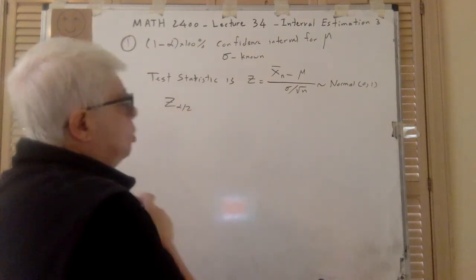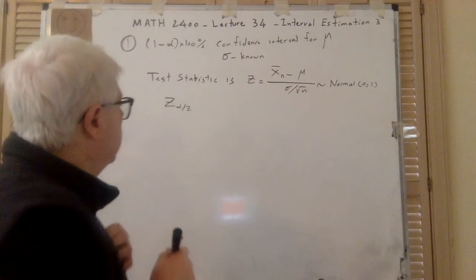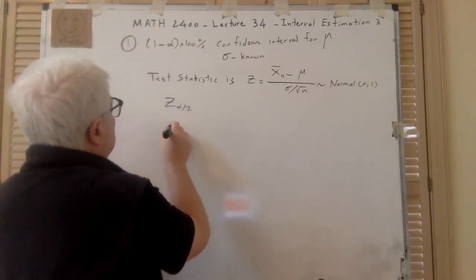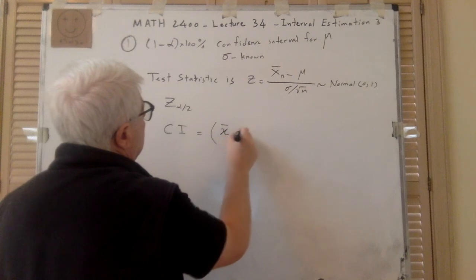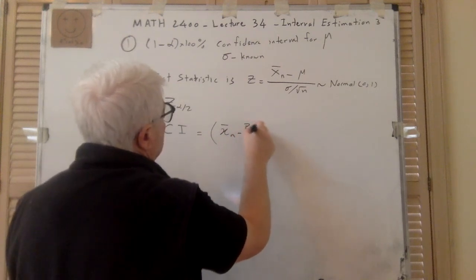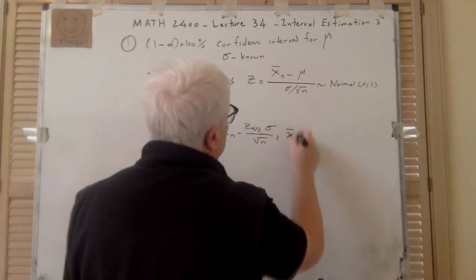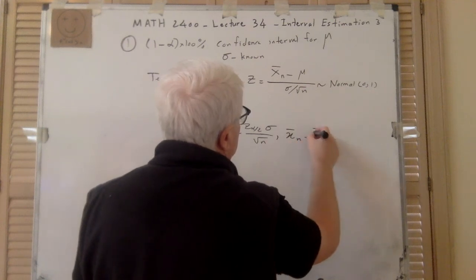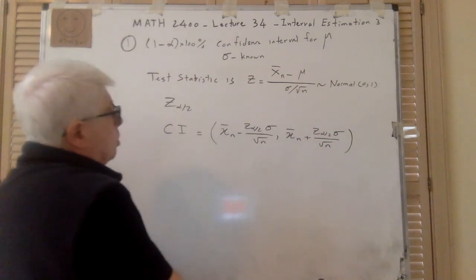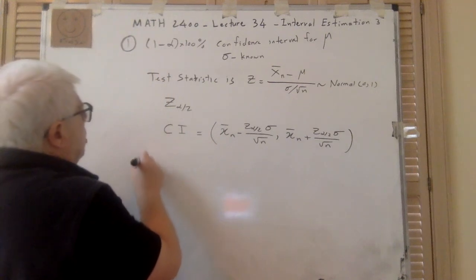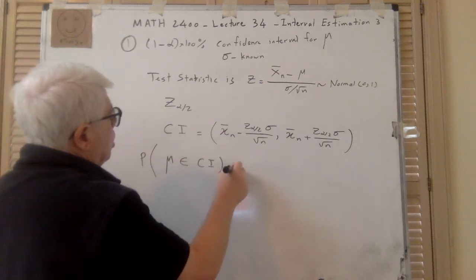I have used z_{α/2} in the notes, so I use z_{α/2} here. The confidence interval CI is: (x̄_n minus z_{α/2} times σ over √n, and x̄_n plus z_{α/2} times σ over √n). So we say that the probability that μ falls in CI is 1 minus α.